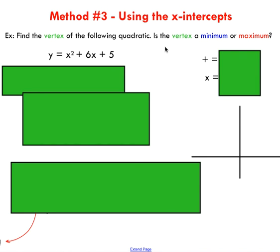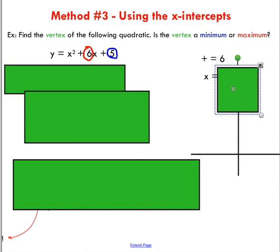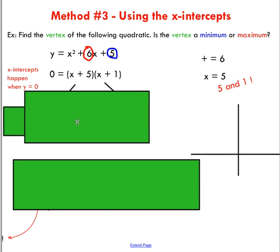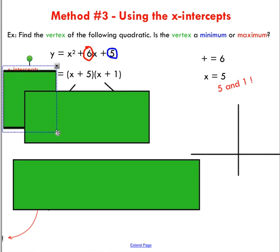The last method, this is probably my favorite—it's kind of an interesting method. Instead of completing the square or graphing, we're going to use factoring. With factoring, we're going to find two numbers that add to get 6 while also multiplying to get 5. The only ones I can think of are 5 and 1, and as it turns out, they also add to get 6. We can factor our expression to get (x + 5)(x + 1).